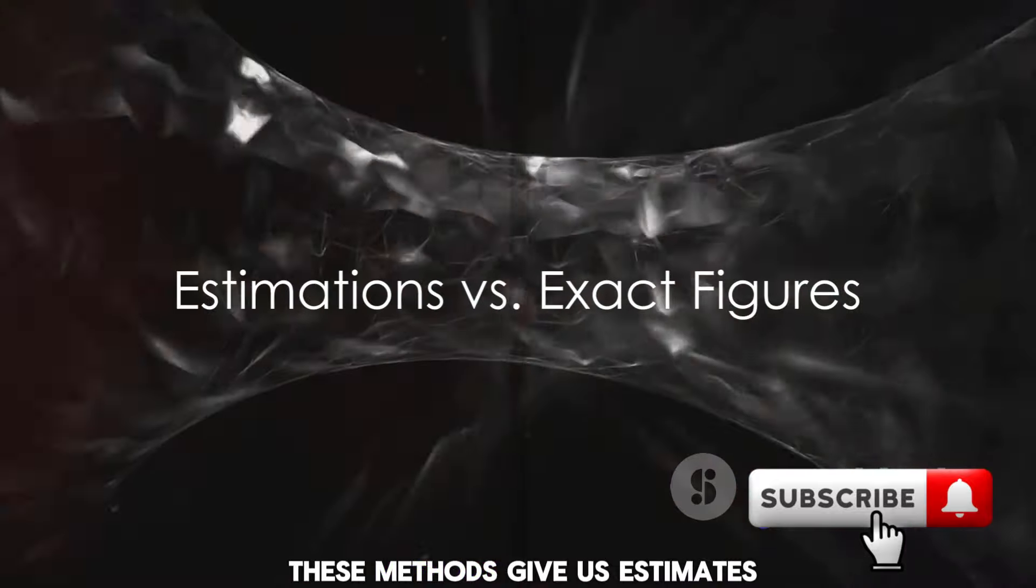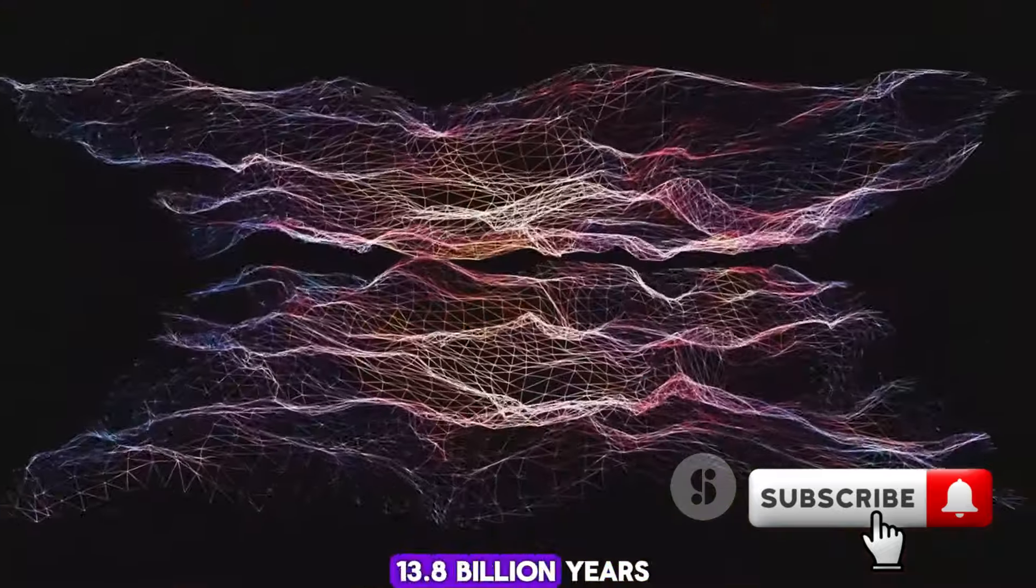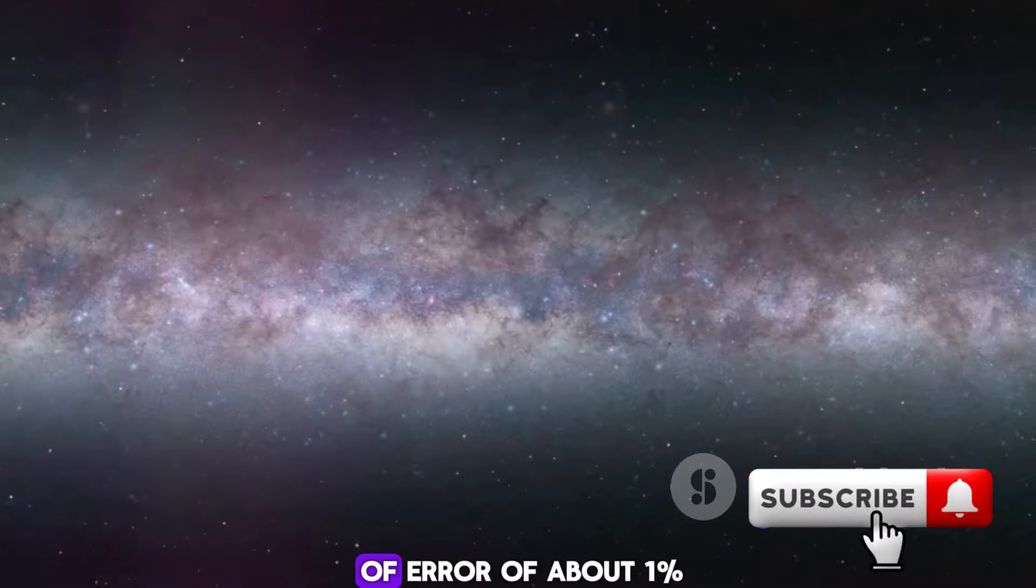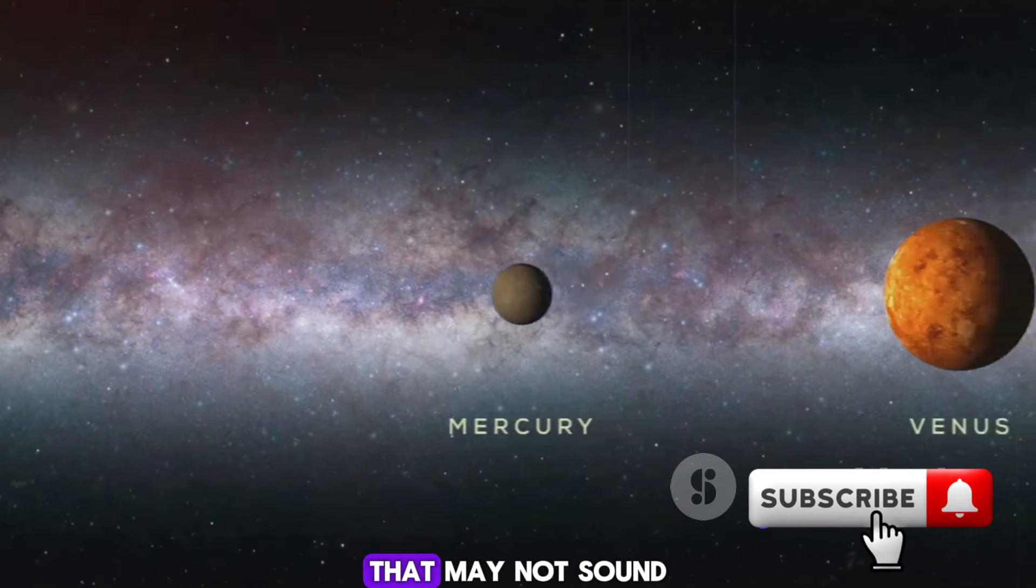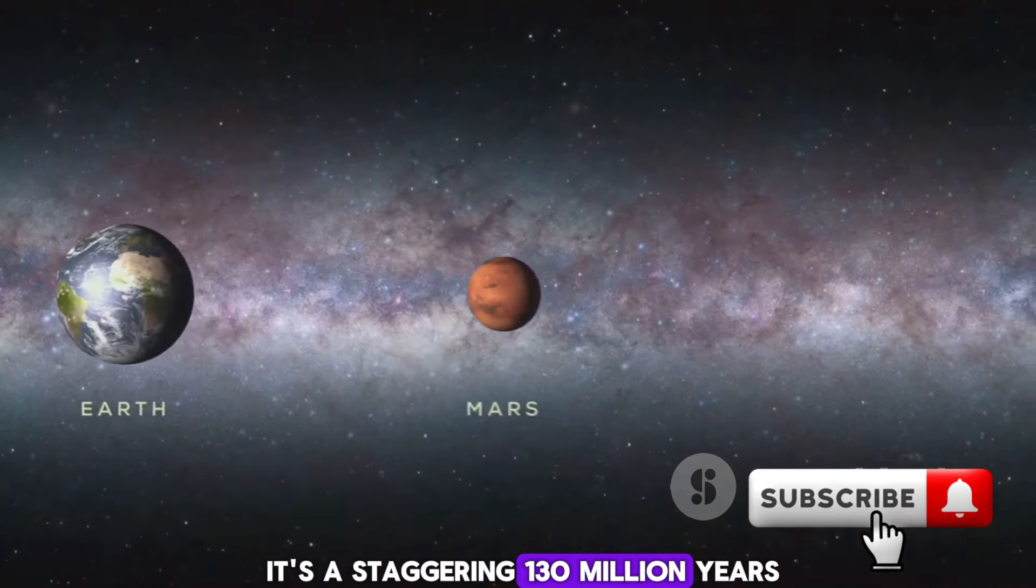The universe's age is estimated to be around 13.8 billion years. But there's a margin of error of about 1%. That may not sound like much, but in cosmic terms, it's a staggering 130 million years.